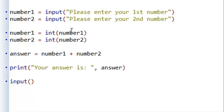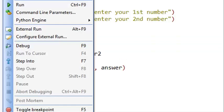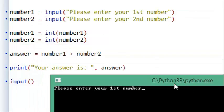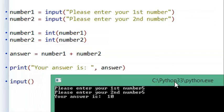Here you can see the integer function is converting the data types of number1 and number2 into integers, so that when we actually run the program and enter our two numbers again, 5 and 5, the answer is now 10.